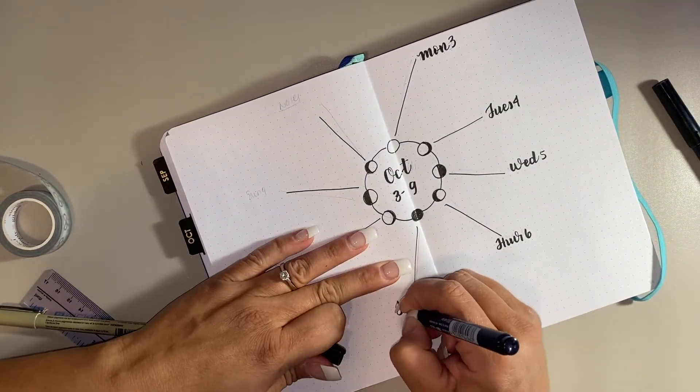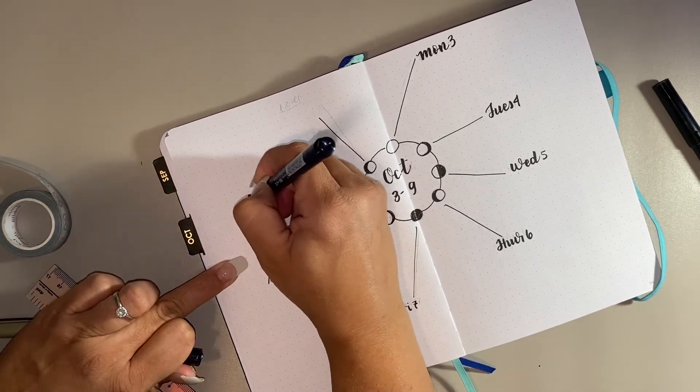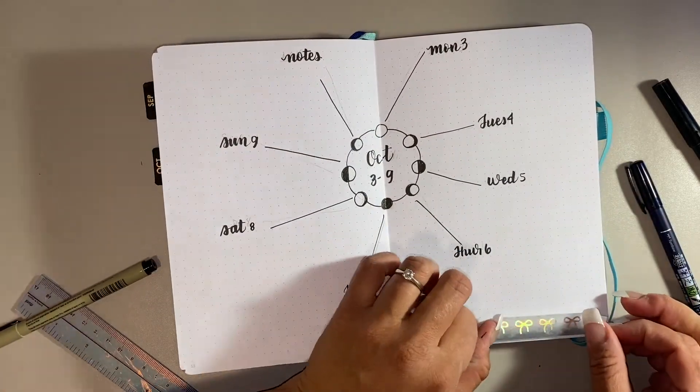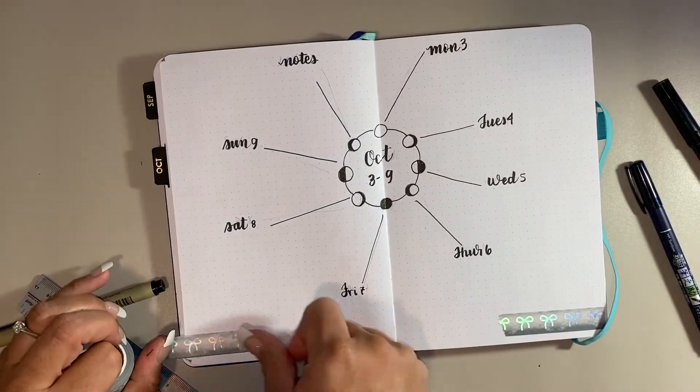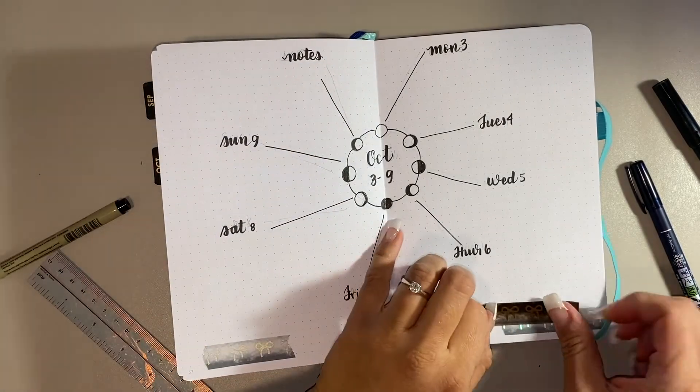The second week I might try a Dutch door. It just depends how much room this allows me. Usually, if you guys have seen my Franklin planner spreads, I have a lot of to-dos every single day. So I'm adding some washi tape to the bottom, and that is it, and we will do a final flip through.